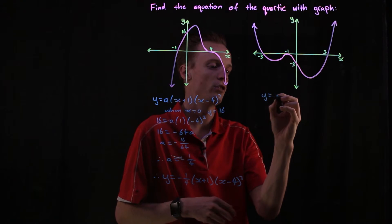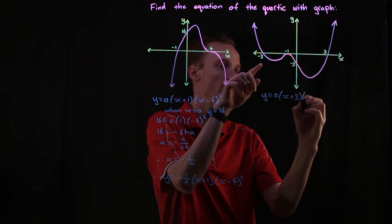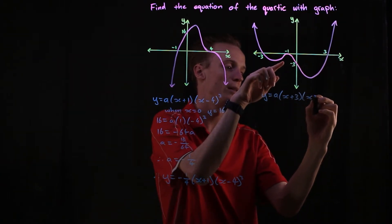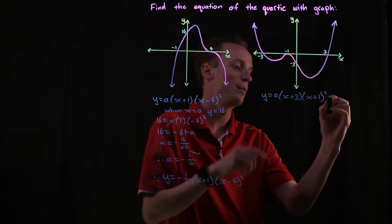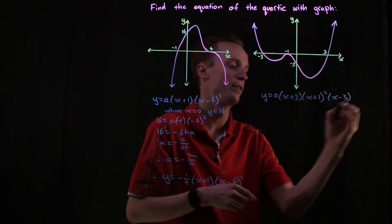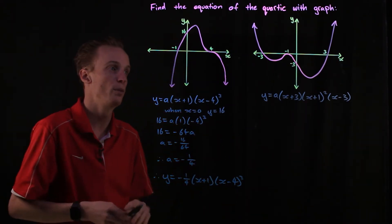When I look at my function in just that general form, I'm going to have x plus three for this root, (x plus one) squared because it's touching, and then x take three for the final root over there. Now I need to substitute a point in again.